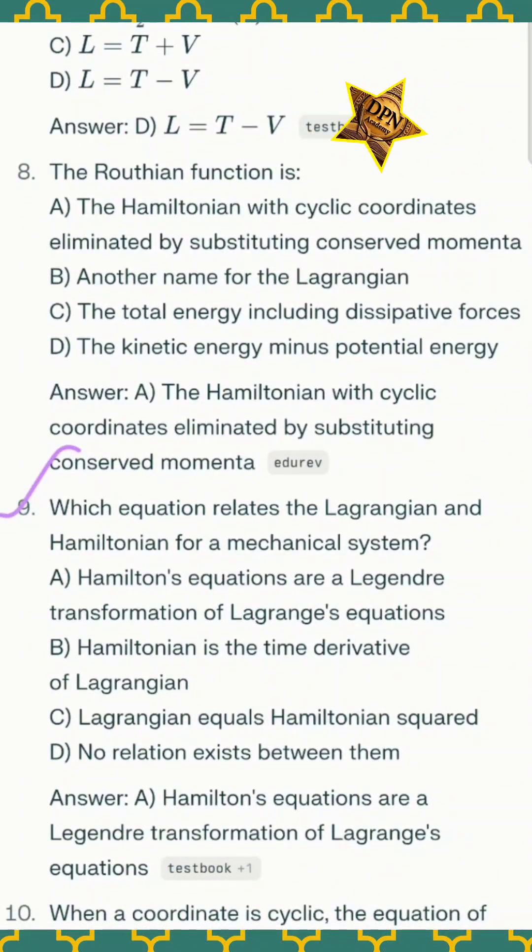Question number nine: which equation relates the Lagrangian and Hamiltonian for a mechanical system? The correct option A - Hamiltonian equation is a Legendre transformation of Lagrange's equations.